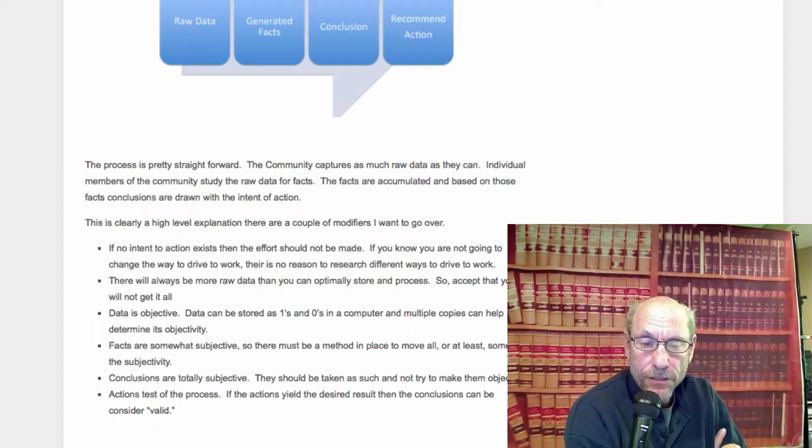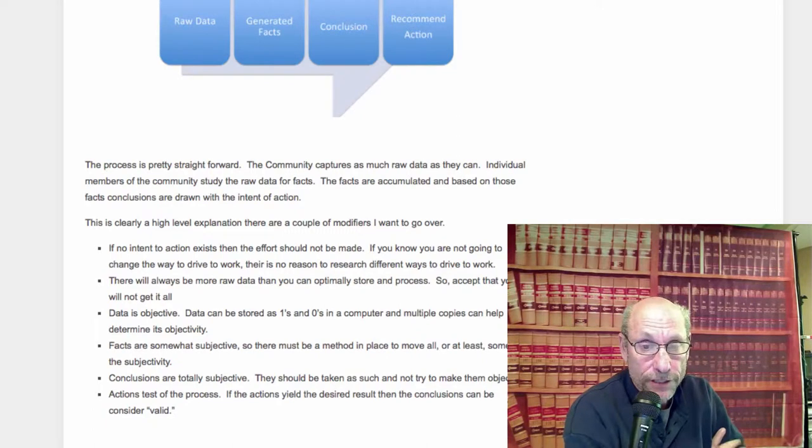The next three are sort of tied together. Data is objective. The data can be stored as zeros and ones in a computer. And by making multiple copies, you can determine that any particular group of data was the raw data that you had.